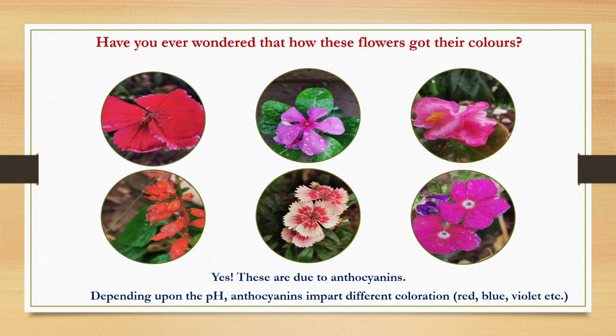Now, depending upon the pH, anthocyanins may impart different types of coloration to plant material — like red, violet, or blue — which we will discuss in our later slides.